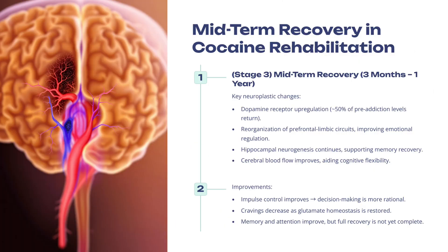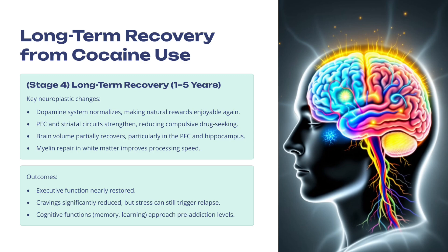The next stage is mid-term recovery — three months to one year. Here we see dopamine receptor upregulation reaching about 50% of pre-addiction levels, reorganization of prefrontal limbic circuits improving emotional regulation, ongoing hippocampal neurogenesis supporting memory recovery, and improved cerebral blood flow aiding cognitive flexibility. We see improved impulse control, improved decision-making, a reduction in cravings — the manifestation of more stable glutamate homeostasis — and improved memory and attention. But we still haven't completely recovered yet.